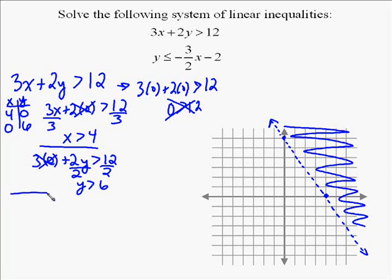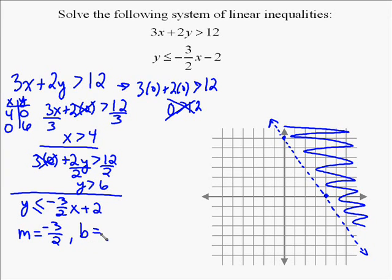Now I'm going to do the other one. This one's a little quicker, because it's already solved for y. So y less than or equal to negative 3 halves x plus 2. So my y-intercept is 2. My slope is negative 3 halves.